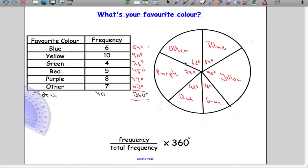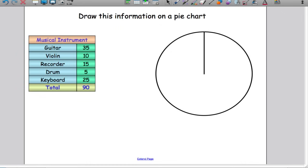So remember, the size of each slice is going to be the frequency divided by the total frequency, and you're going to multiply that by 360 degrees. That tells you how big it's going to be, and then just use your protractor to construct the pie chart. And there's a question for you to try now if you want. You can pause the video and then try and draw the information here on a pie chart.